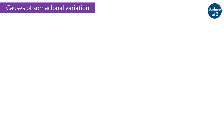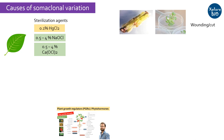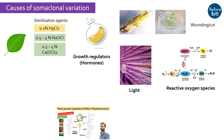During plant tissue culture, various stressful conditions such as exposing the explant to harsh surface sterilization agents, wounding, hormone imbalance in culture media, and light conditions result in an increase in reactive oxygen species such as free radicals, superoxide ions, and hydrogen peroxide, which results in oxidative stress — a major cause of somaclonal variation.